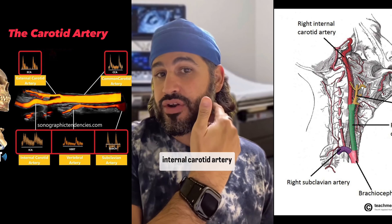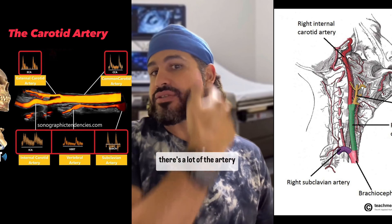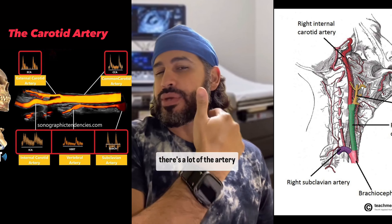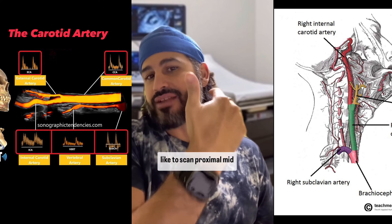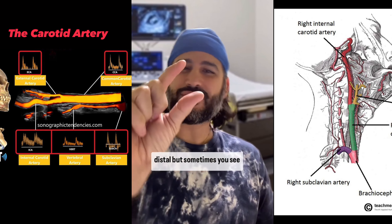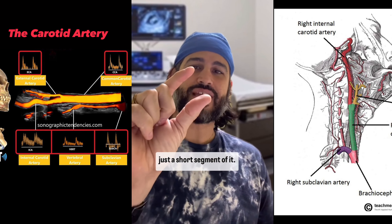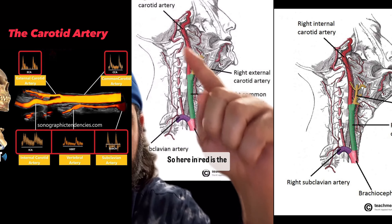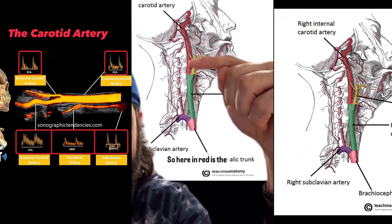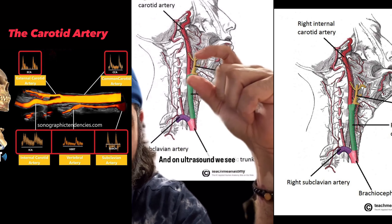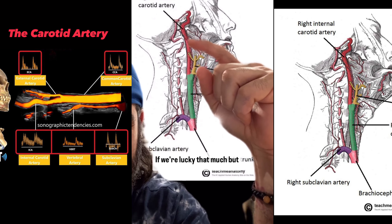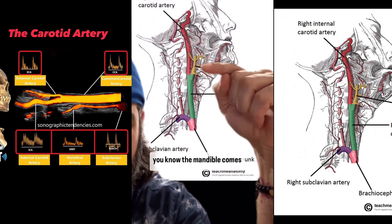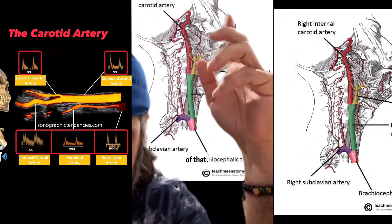When we're scanning the internal carotid artery, there's a lot of the artery that we can't see. We like to scan proximal, mid-distal, but sometimes you see just a short segment of it. Here in red is the internal carotid artery, and on ultrasound we see maybe about that much, if we're lucky that much. The mandible comes into play and it's going to block out most of that.